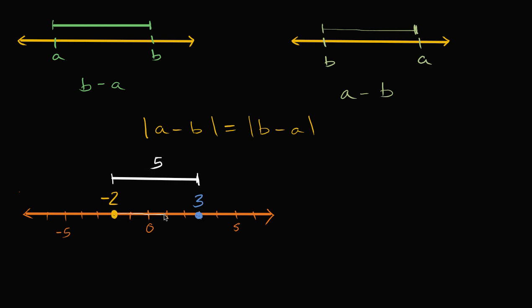You see it right over here. One, two, three, four, five. Or you'd have to go five backwards to go from three to negative two. But let's see that what I just wrote actually applies right over here.